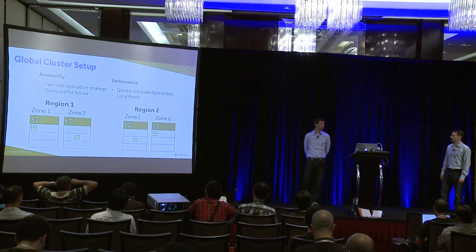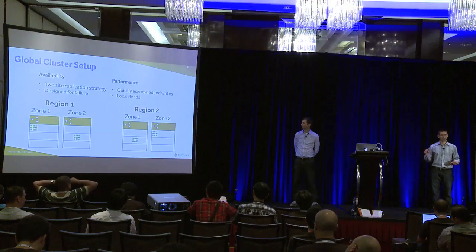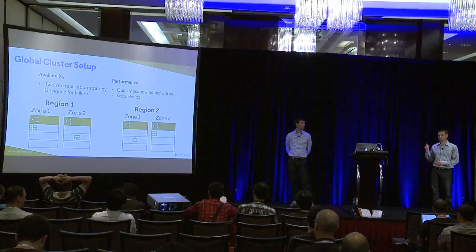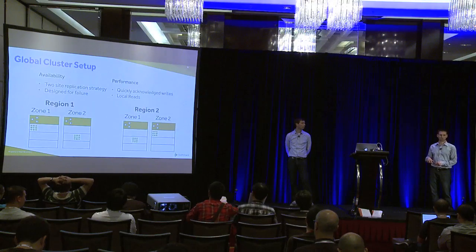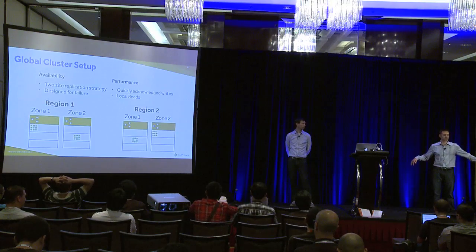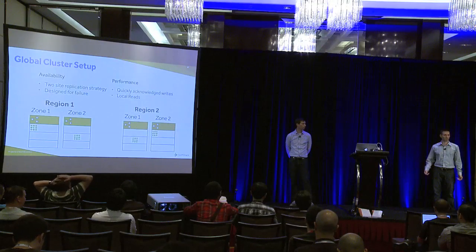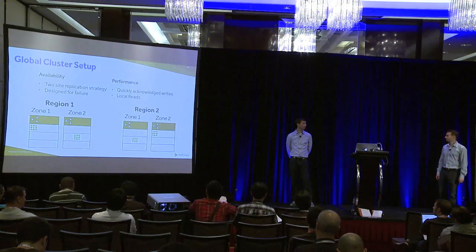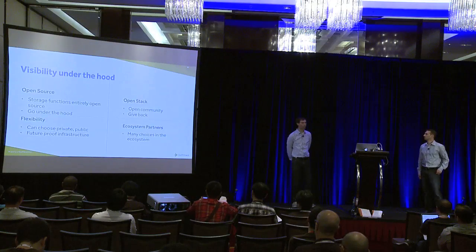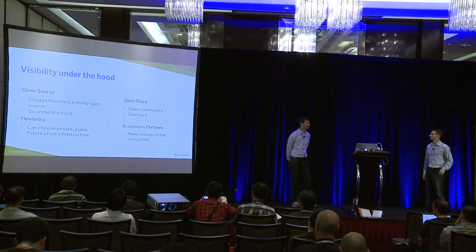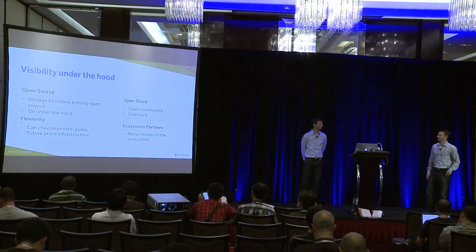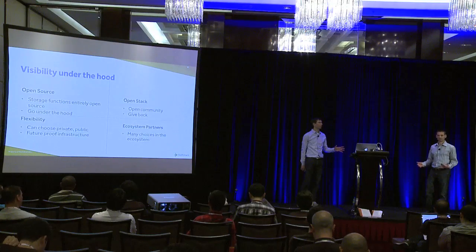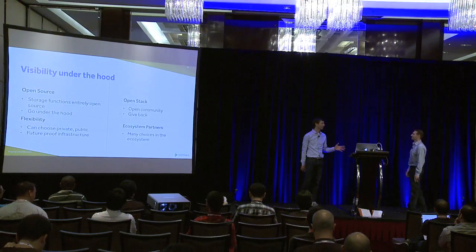On the performance side, in each data center as data is getting written, it sends an acknowledgement back to our processing servers. The data is written as soon as there are two copies stored — it doesn't wait for the data to be distributed across the entire cluster. Those processing servers or a different tier that reads the data can read data locally in either data center. Now we're using open source OpenStack — we love the fact that we can give back to the community as we run into challenges and dig into the code. It's new to us — we're in Seattle, which is typically more closed, but we're excited about the idea of giving back to the community.